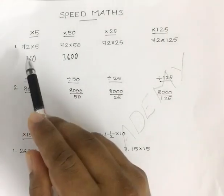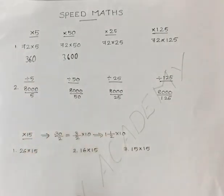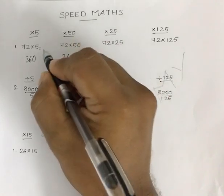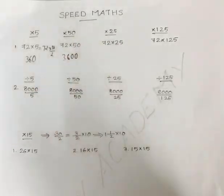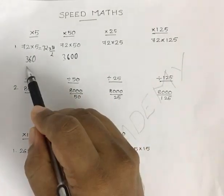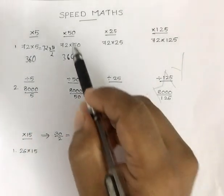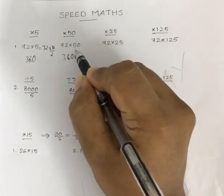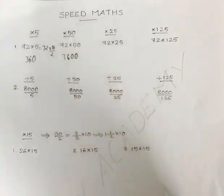Whenever you need to multiply a number with 5, take half the number and multiply with 10. So 72 into 5 is the same as 72 into 10 by 2 — you take half the number and multiply with 10. The same way, multiplication with 50 means it is 100 by 2, so you take half the number and multiply with 100.